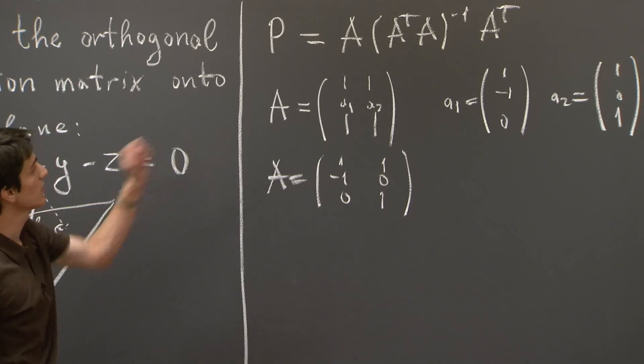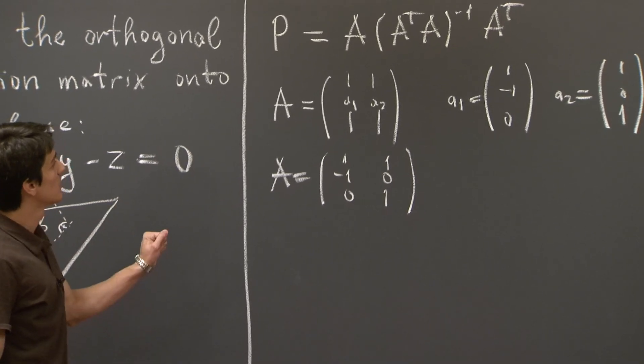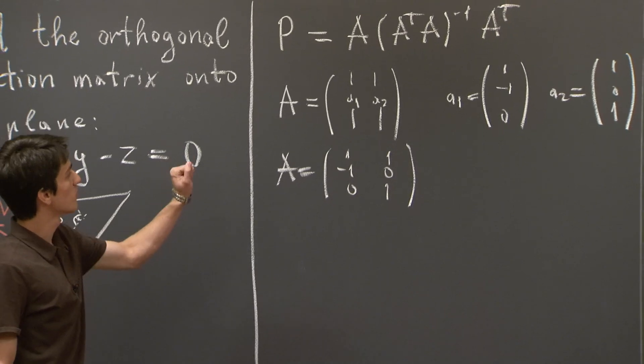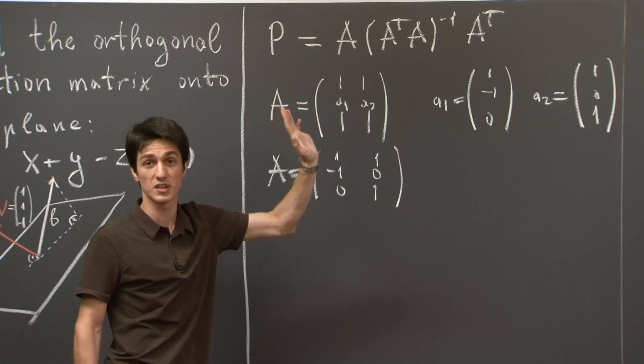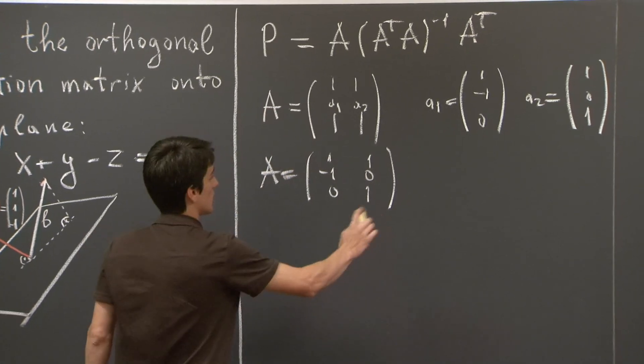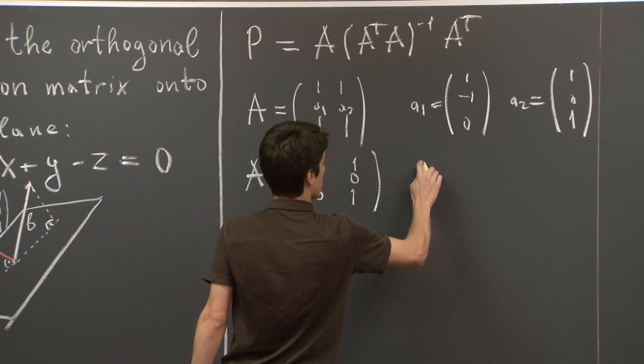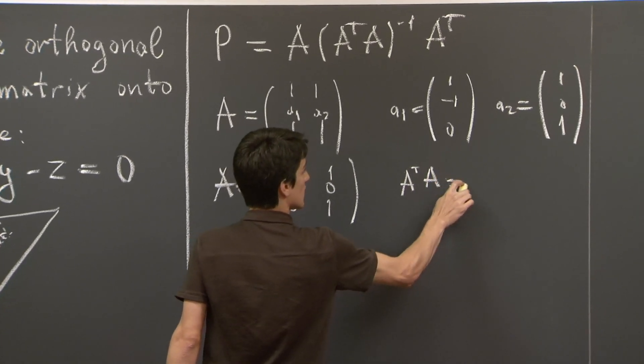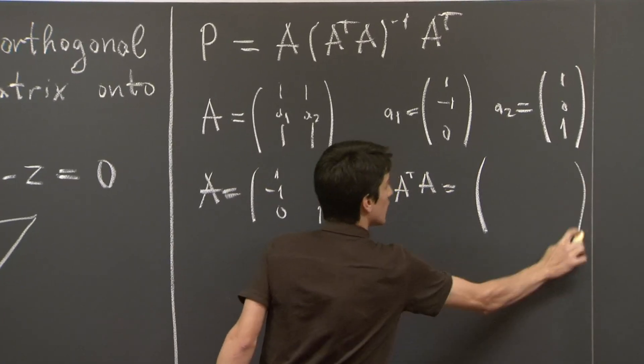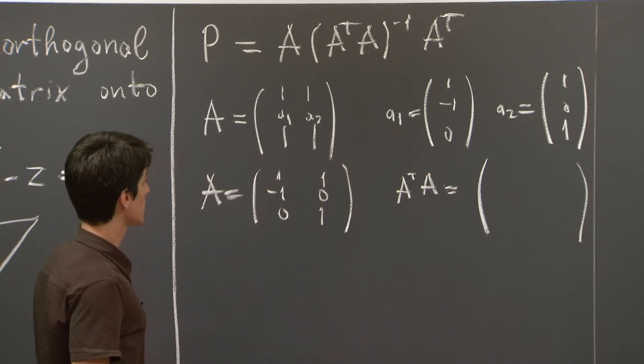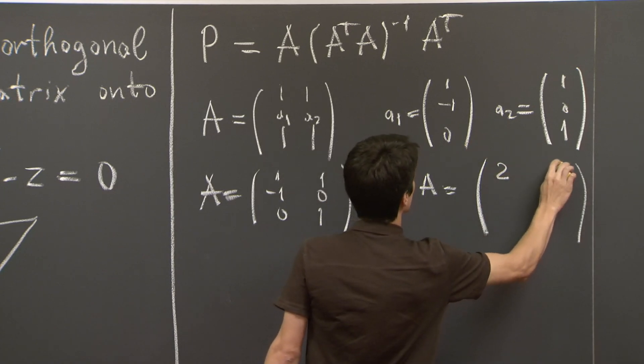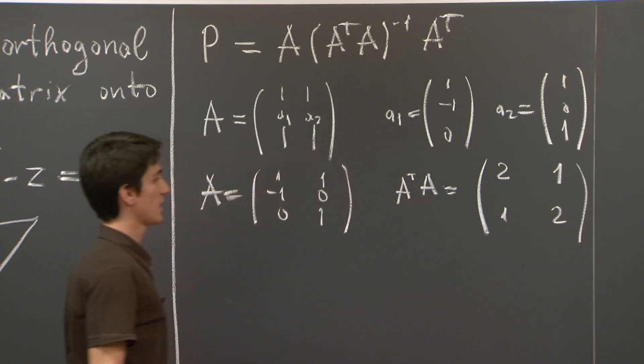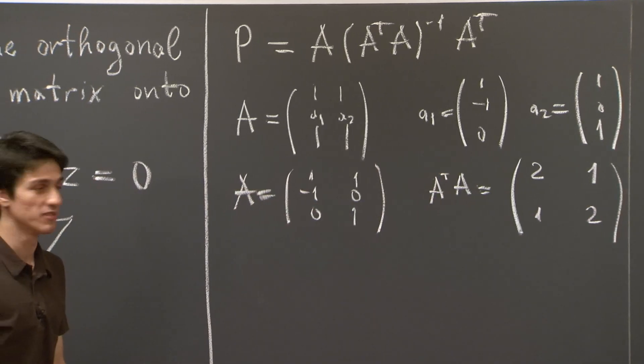So in the formula, I guess the slightly more complicated combination is A transpose A inverse. So let me compute that first for you. So A transpose A is a 2 by 2 matrix. And it's not so hard to figure out that it's like 2 and 1, 1, 2. Now we shall invert it.